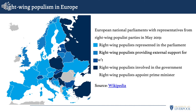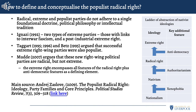This map shows European national parliaments with representatives from right-wing populist parties in May 2019. Different shades of blue represent different roles: lighter blue where right-wing populists are simply represented in parliament — which is pretty much everywhere except Ireland; where they provide external support, as the DUP did for Theresa May's government; where they are in government; and where they appoint the prime minister, as in Poland. Right-wing populism is quite pervasive across Europe but not necessarily everywhere.